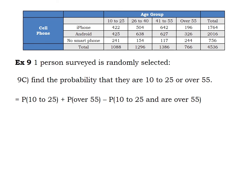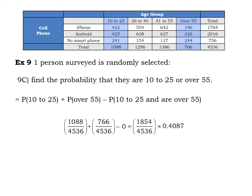Here's the formula and how it should have been written. The probability of being 10 to 25, plus the probability of being over 55, minus a big fat zero — because there is nobody who is both 10 to 25 and over 55. Those two events are disjoint, so it simplifies down to 1854 out of 4536.